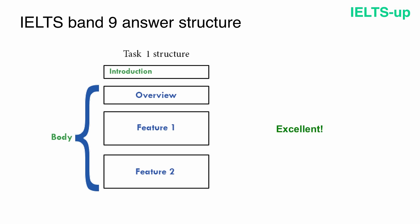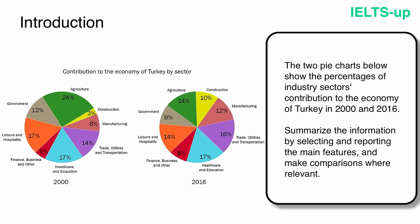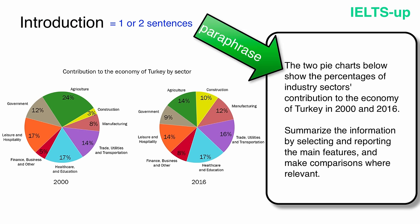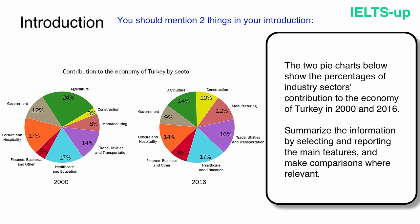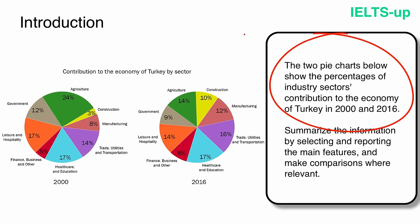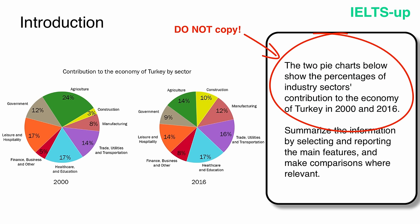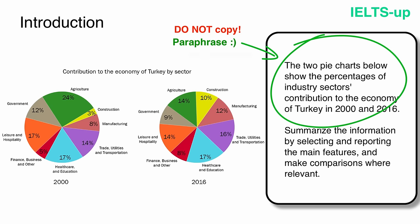Now you know the answering strategy. Let's start writing our band 9 answer. The introduction is one or two sentences where you simply paraphrase the information from your question card. You should mention two things: what your chart shows and for what period of time. You cannot just copy the text from your question card — such writing will receive a low score. Instead of writing 'The two pie charts below show the percentages of industry sectors' contribution to the economy of Turkey in 2000 and 2016,' you should write a paraphrased version using synonyms.